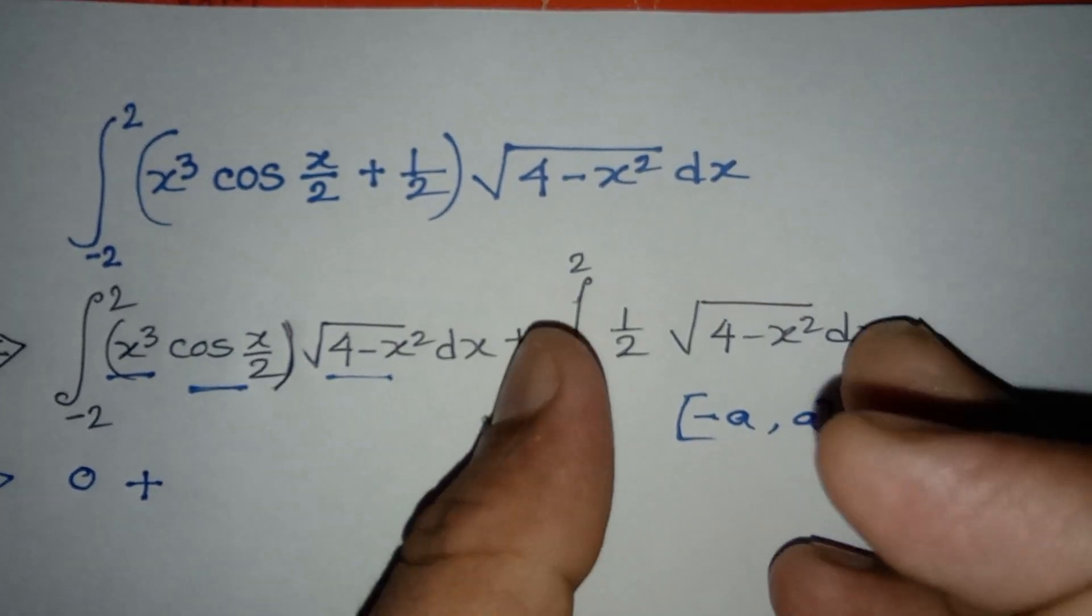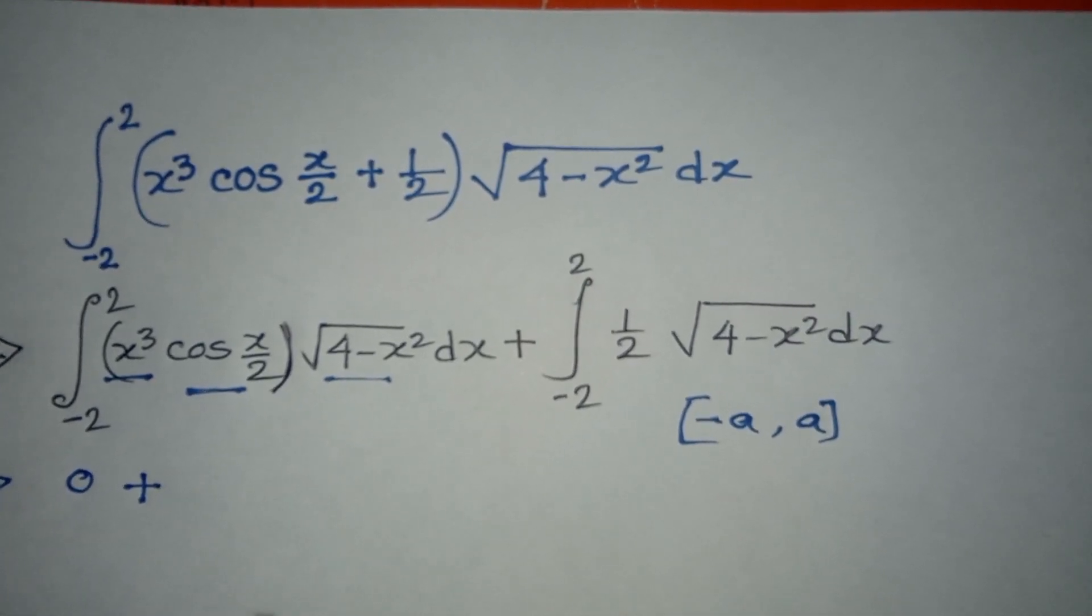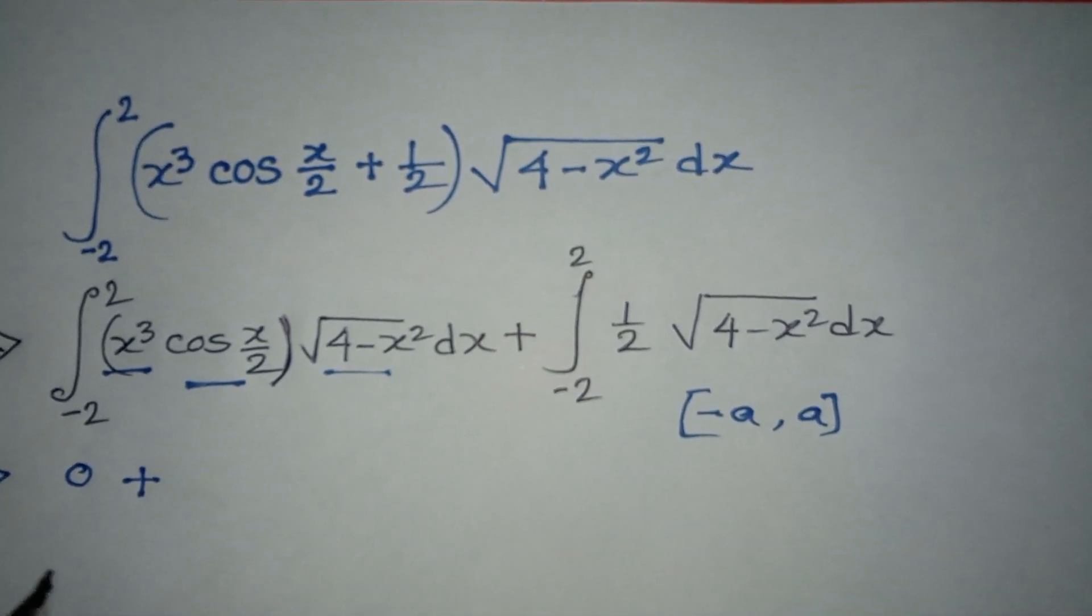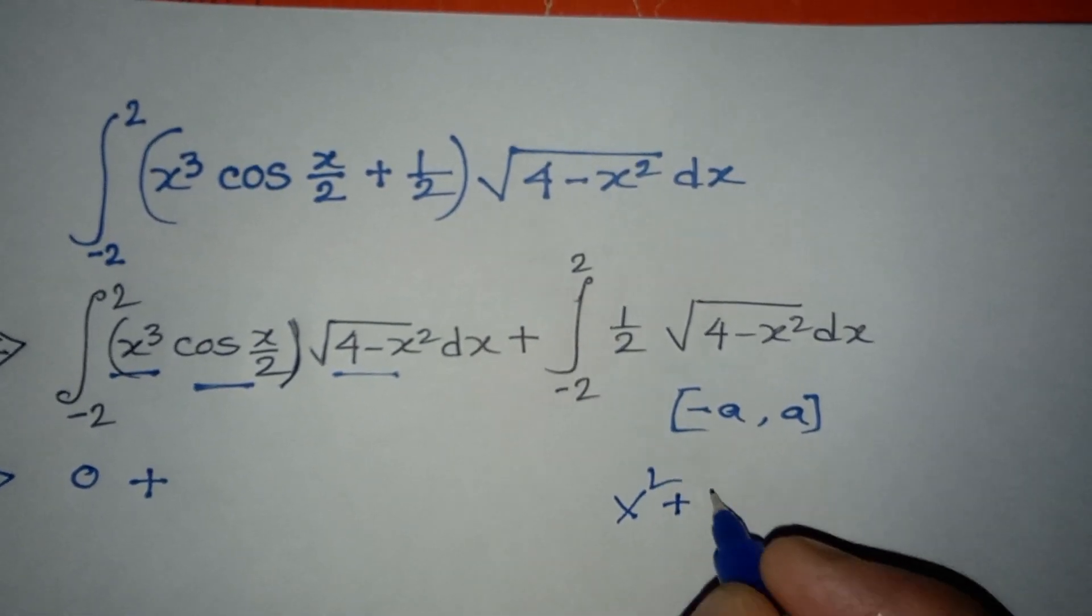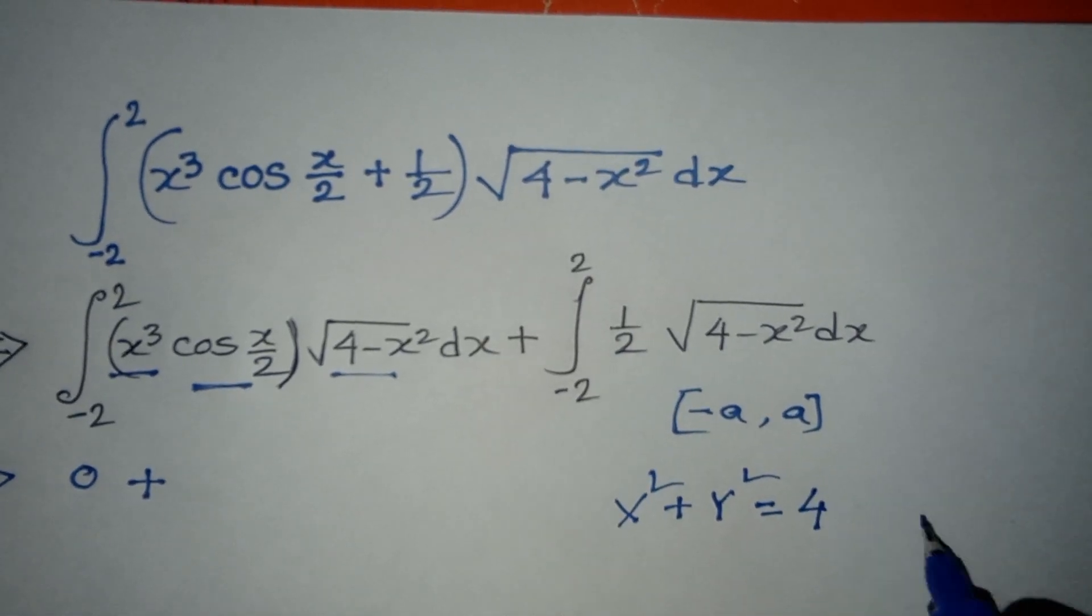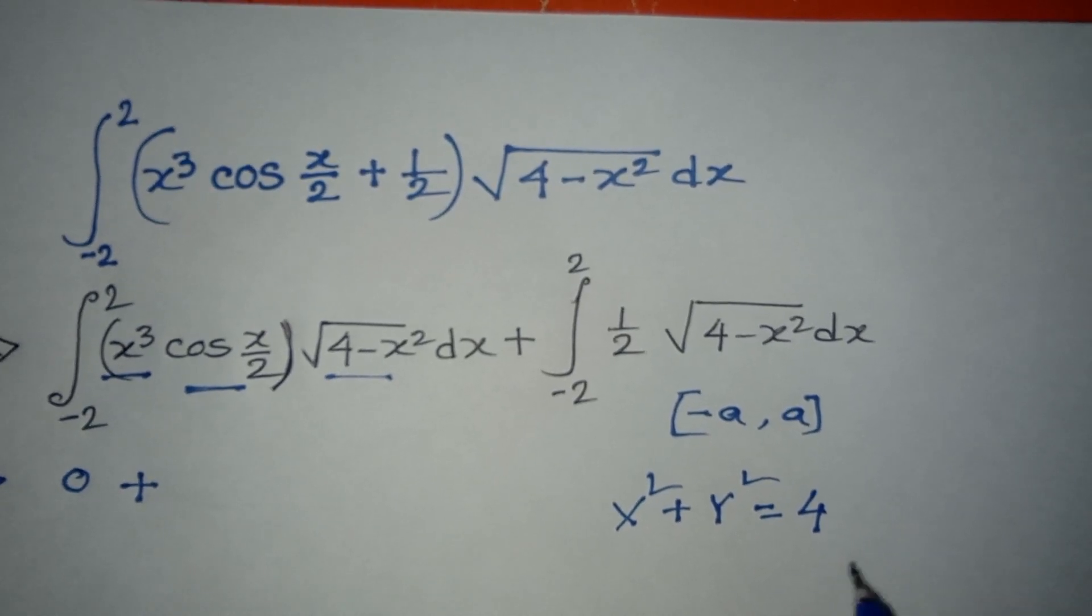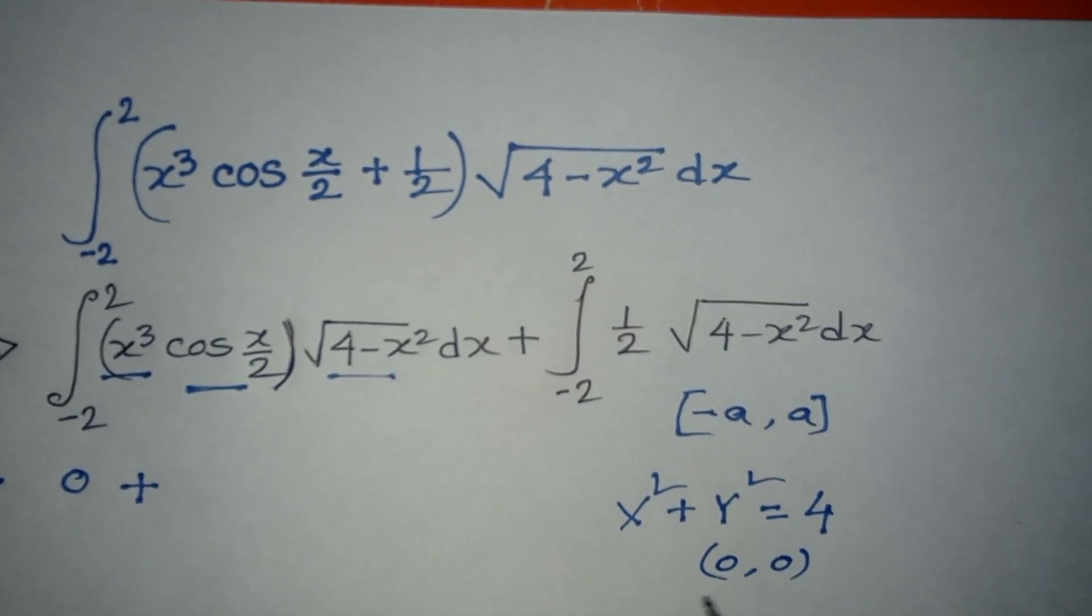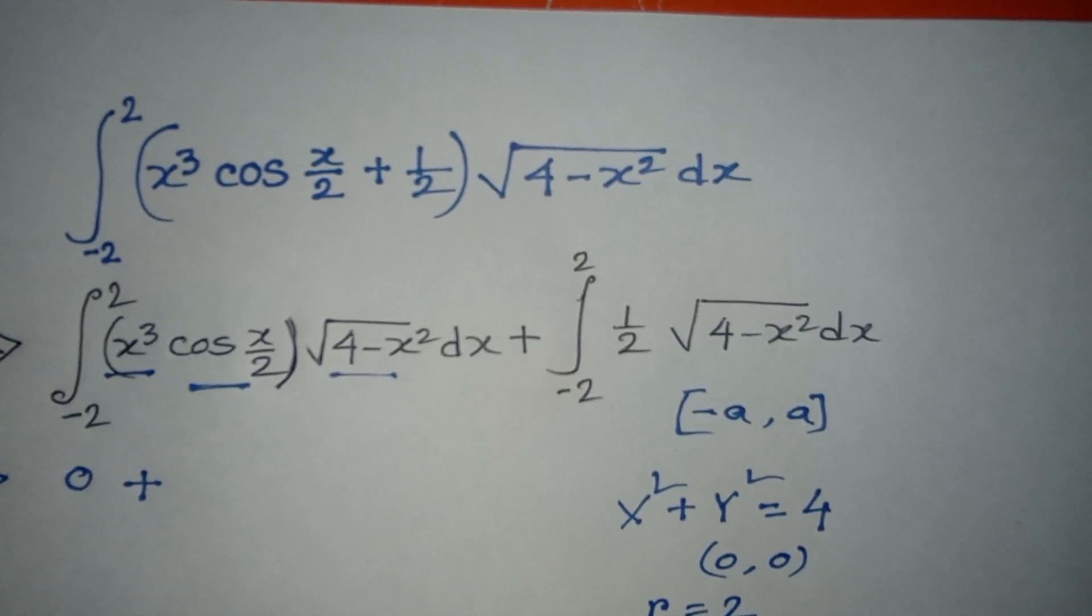Now the second part. How do you solve this integral? Remember, x² + y² = 4 is the equation of a circle centered at (0,0) with radius 2.